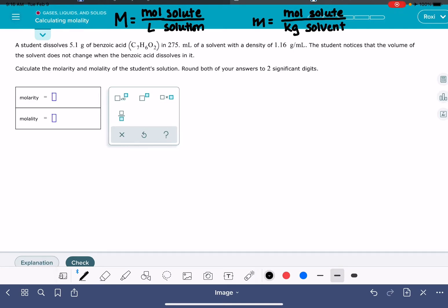So let's see what information we have available to us in this problem. We have 5.1 grams of benzoic acid. That's going to be our solute. We have 275 milliliters of a solvent and its density. So we could convert the solvent to a mass using its density.